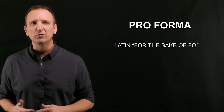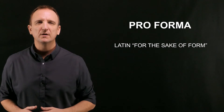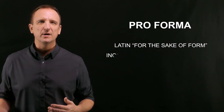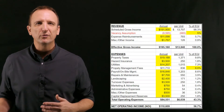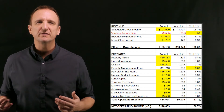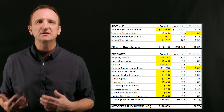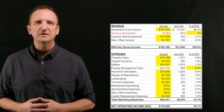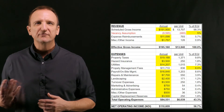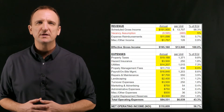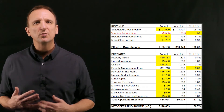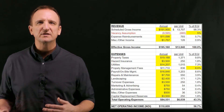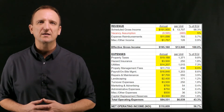The term pro forma is a Latin term that means 'for the sake of form' or 'as a matter of form,' and it's essentially a combined income statement and cash flow statement for a property. Although every pro forma can be a little bit different, the purpose of it is to put the information into a consistent format outlining the various income and expenses. Different real estate firms and investors may use slightly different terminology, especially in different parts of the country, so it's important to understand what each of the different concepts represents and how they're analyzed.